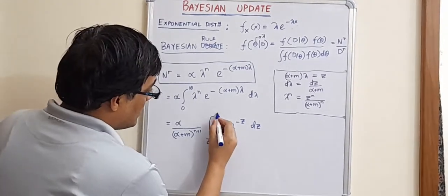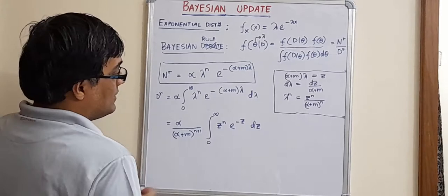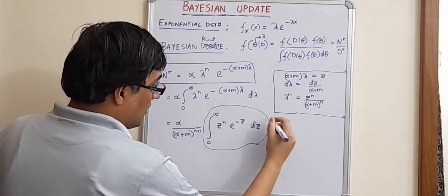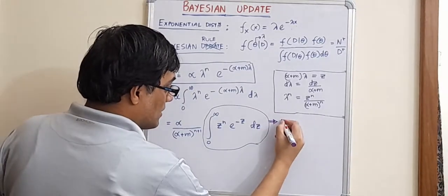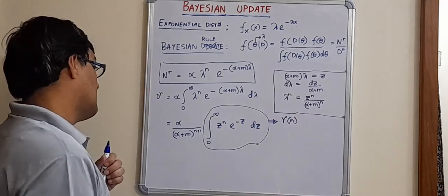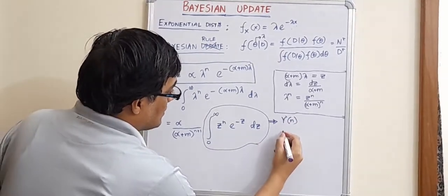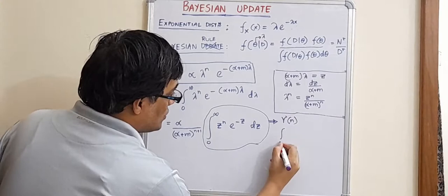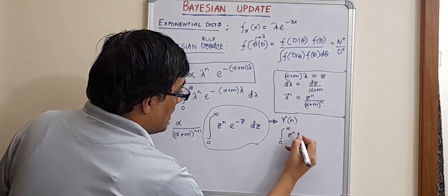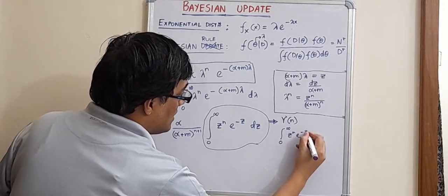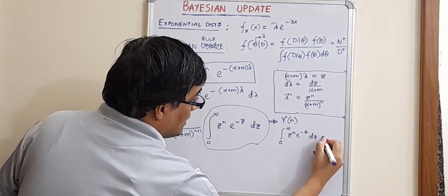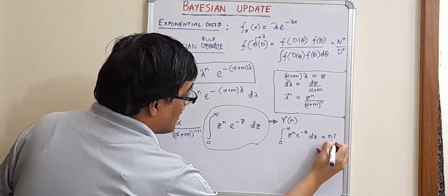So, after making these substitutions, it is clear that we can identify this integral as something called the gamma function, the gamma function, right? So, the definition, according to which we can write that z to the power n into e to the power minus z dz is basically factorial of n, right?